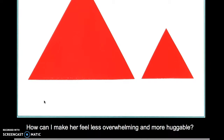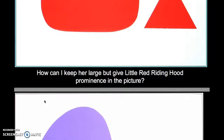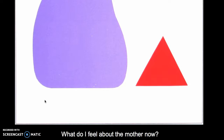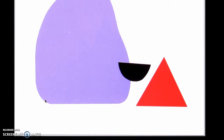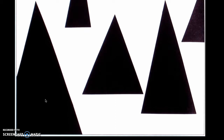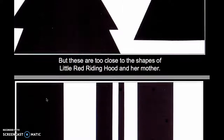She changes the shapes and asks: how can I keep her large, but give Little Red Riding Hood prominence in the picture? The color changes, and she asks: how do we feel about the mother now? She discusses the way that shapes and colors have the power to affect us emotionally, and progresses back to the story, wanting to keep it as simple as possible. But these shapes were a little too close to those of Little Red Riding Hood and her mother. She wanted to create a sense of depth — how is this accomplished through simple lines?